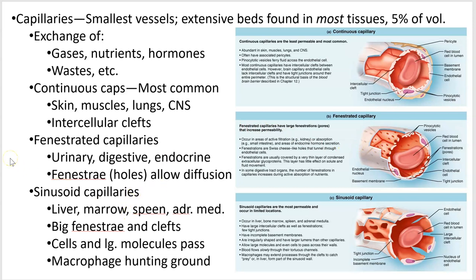Lastly are sinusoid capillaries, which have the most gaps. You can see these big sinuses or spaces, and the basement membrane isn't really complete — there are gaps in it too. This is where cells need to move across. Lots of cells can move in and out of these capillaries. In the marrow where you make blood cells, they get into the bloodstream through sinusoid capillaries. Macrophages can hang out on this surface and extend their pseudopodia to snag bacteria as they come by.